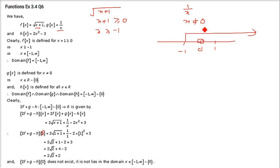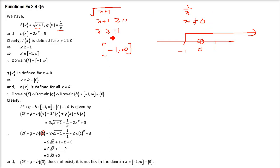There are two methods. The first is the union method. The second method is: just write minus 1 to infinity, both endpoints inclusive, because the condition is greater than or equal to minus 1, and then simply remove 0 from the interval. So minus 0 — that is, the domain is [−1, ∞) excluding 0.